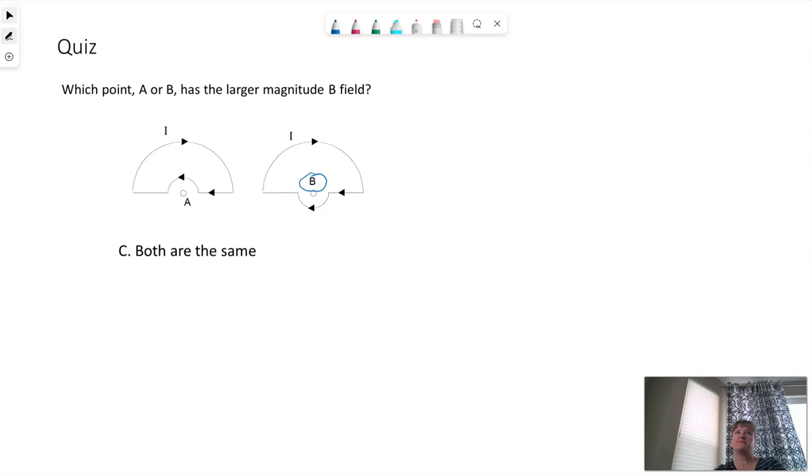Now, in terms of calculating the strength of the field in either case, we would have to look at B due to each semicircle individually. We know B of a loop. I have my test notes next to me here.